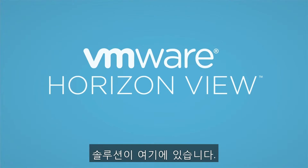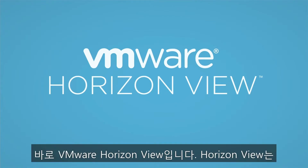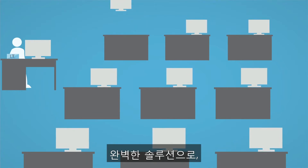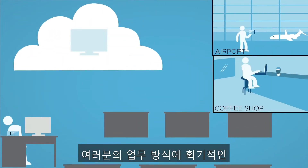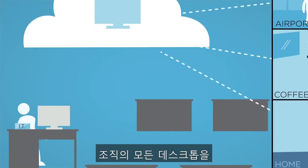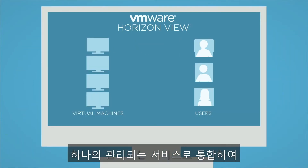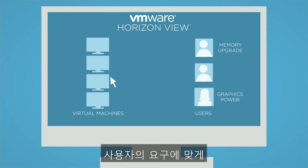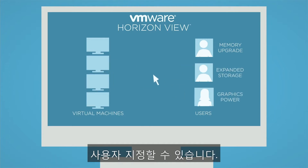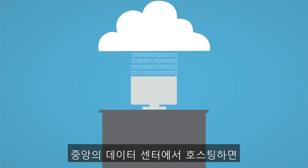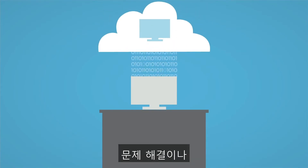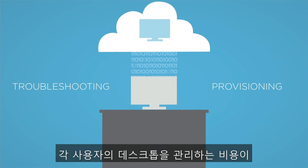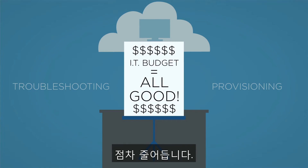Well, the new solution that you need is right here with VMware Horizon View. Horizon View is a complete solution for desktop and application virtualization, and it will completely transform the way you work. By putting all of your organization's desktops into one centralized managed service, you have one place where you can easily manage and customize desktops to fit the needs of your users. When you take your desktops and transform them into virtual machines and centrally host them on your data center, things like troubleshooting and provisioning are simplified, and the cost of managing each user's desktop goes way down.